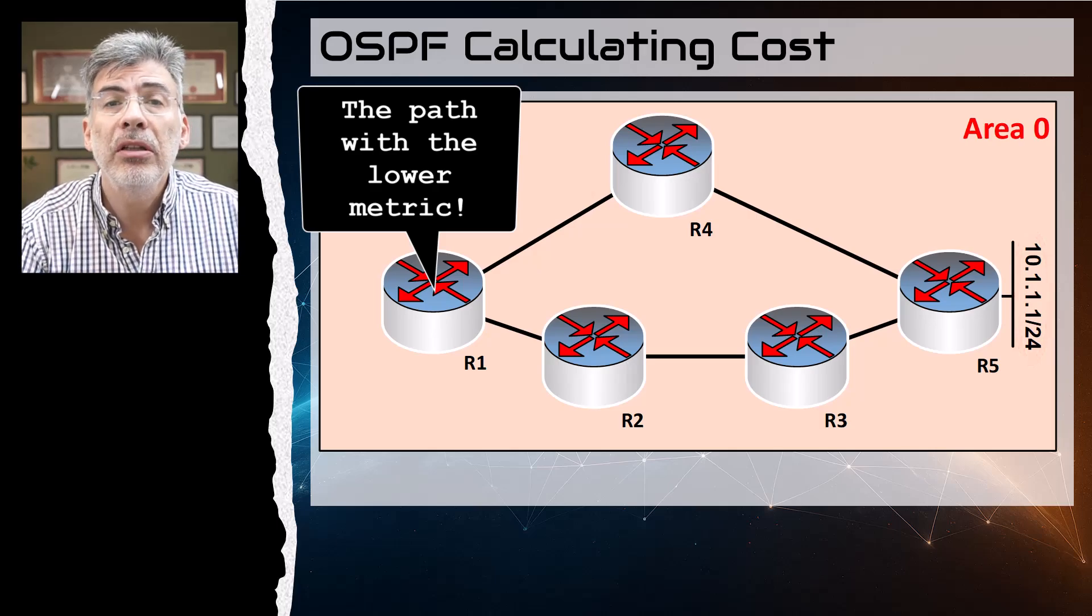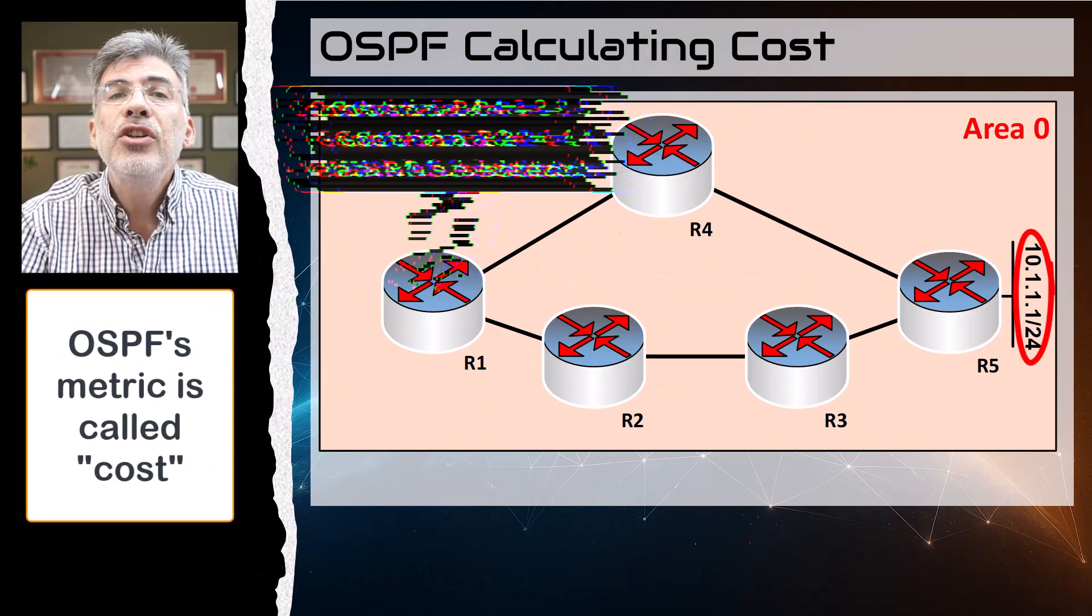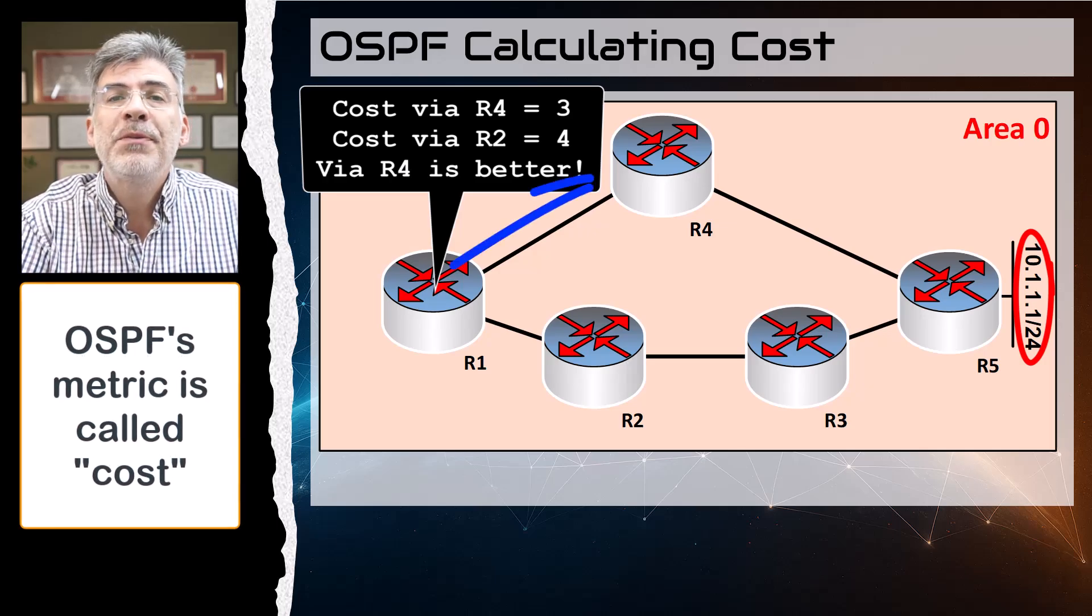The route with the lower or better metric is installed. OSPF's metric is specifically called cost. Each route that is learned by an OSPF router has a particular cost attached to it.